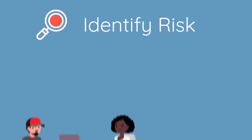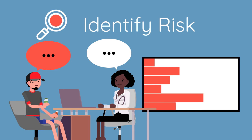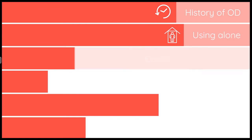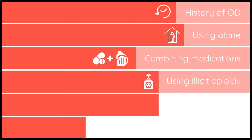The first key strategy is to identify the patient's specific overdose risk factors, which may include past history of overdose, using alone, combining prescribed medications with other opioids or sedating medications such as benzodiazepines and alcohol, and using illicit opioids contaminated with fentanyl.